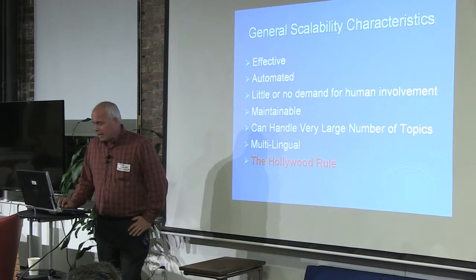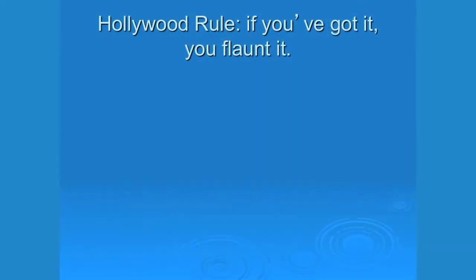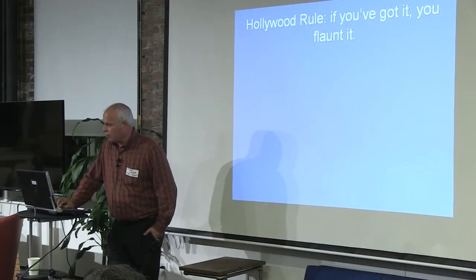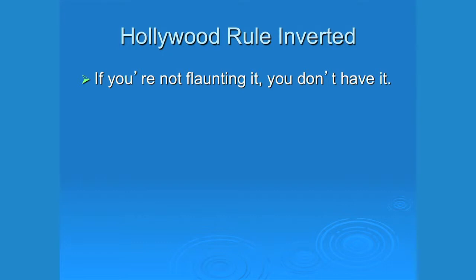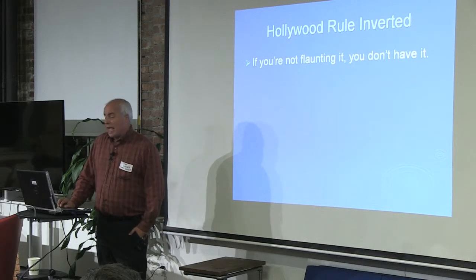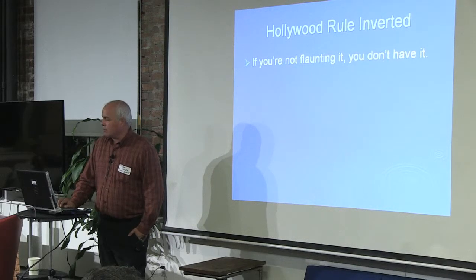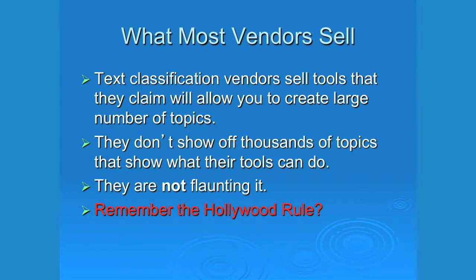The inversion of the Hollywood Rule is: if you're not flaunting it, you don't have it. If you look at text classification websites, you won't find lots of actual topics — they talk about technology but not the topics. I think the most important thing when evaluating text classification is seeing lots of actual data they can produce, rather than hearing about APIs and tools. They talk about what they sell, they don't show off thousands of topics — so according to the Hollywood Rule, they don't have it.